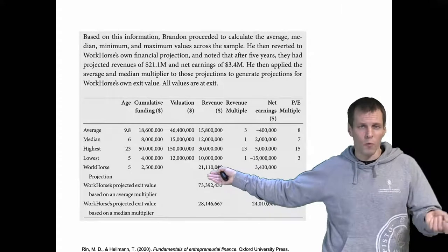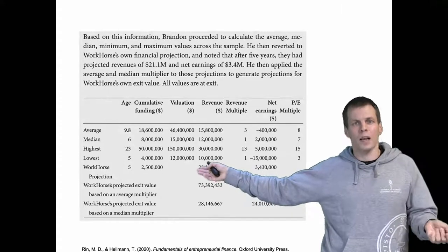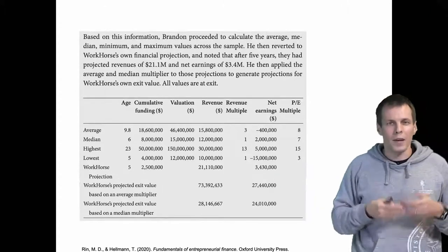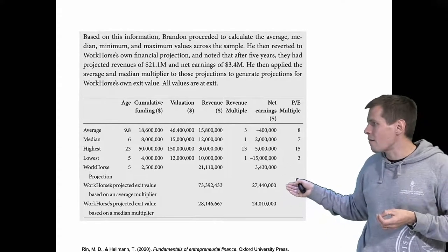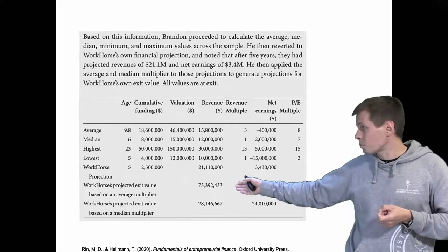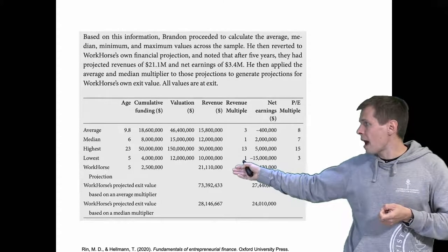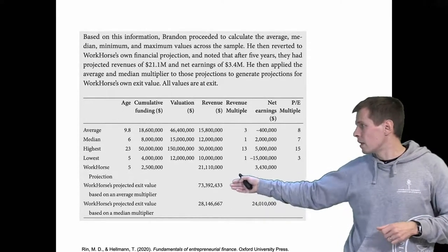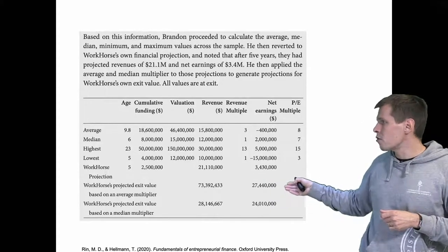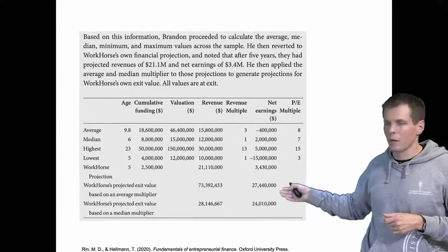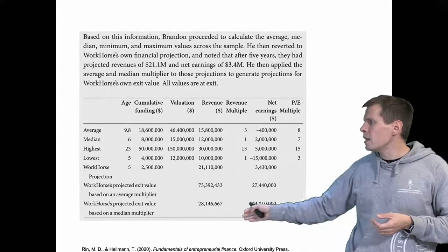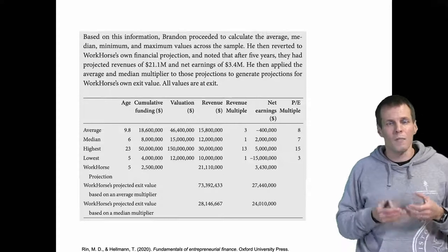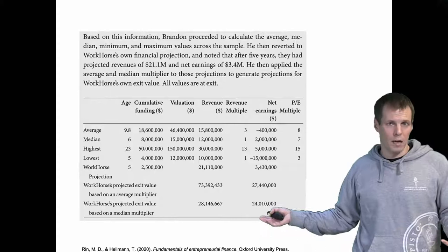With projected revenues at exit of 21 million and a projected net earnings figure, we calculate valuation estimates. Multiplying 21 million in revenues by the average revenue multiplier of 3 gives approximately 73 million. Using the average earnings multiplier of 8 with 3 million in earnings gives 27 million. After ruling out outliers, this analysis gives a ballpark estimate that the company's exit value would be around 25 million dollars.